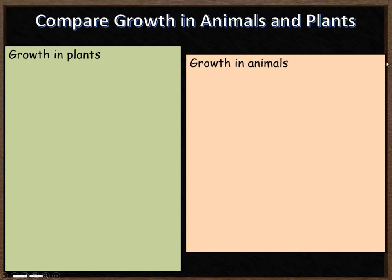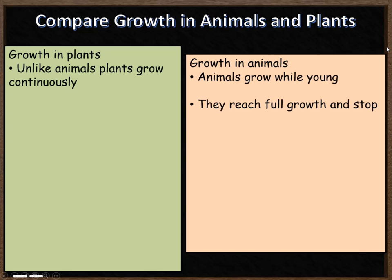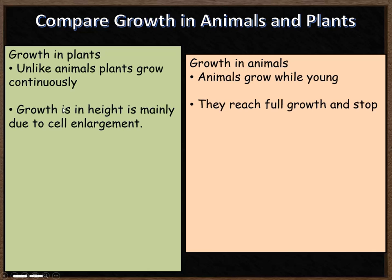Now let's compare growth in plants and growth in animals. In plants, growth occurs continuously throughout the plant's life — it doesn't stop when the plant reaches maturity. Whereas in animals they grow whilst they're young, then reach full growth and stop. Growth in height in plants is mainly due to cells elongating or getting bigger, whereas growth in animals is due to cell division — there being more cells.